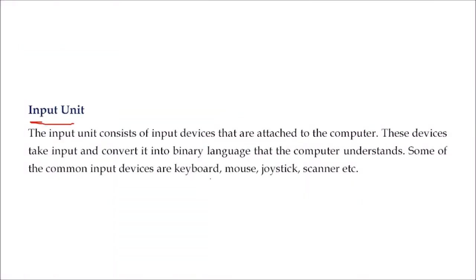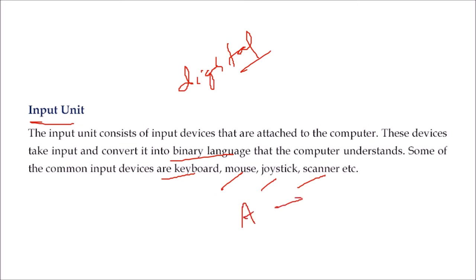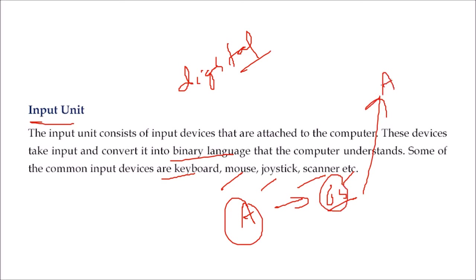The input unit: we can input data using a keyboard, mouse, joystick, and scanner. Because the computer only understands binary language, whatever you put in — for instance, pressing 'A' on the keyboard — the ASCII equivalent, say 65, goes inside the computer. This ASCII number is written in binary form and that binary form is understood, and 'A' will be displayed on your output device. Computer does not understand letters — it only understands numbers in binary form.